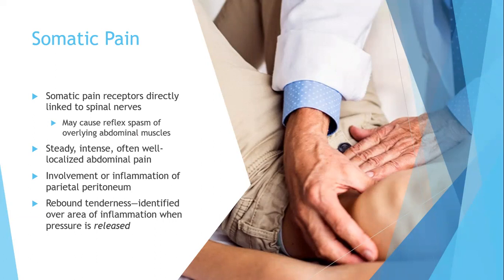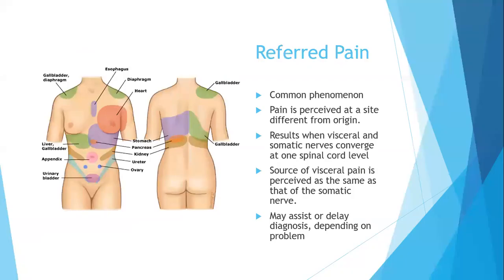Rebound tenderness occurs over an area of inflammation when pressure is released — one way they test for appendicitis is pressing on the lower right quadrant and releasing to check for tenderness. Referred pain is common with digestive disorders — pain perceived at a site different from the origin. Visceral and somatic nerves converge on one spinal cord level, so visceral pain is perceived at the corresponding somatic location, which can assist or delay diagnosis.